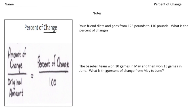Alright, so really what you need to know is over here in this box — this is the percent of change proportion. All it is: percent of change over 100 equals the amount of change over the original amount. Anytime you hear the word 'original,' that's the starting point, where the change occurred from. The amount of change is the difference — how much something has grown or maybe shrunk.